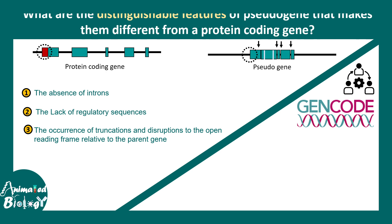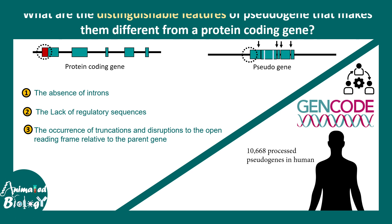The GENCODE consortia have named specific genes as pseudogenes and annotated them throughout the human genome. It turns out the human genome has almost 10,000 or more pseudogenes. That's a lot.